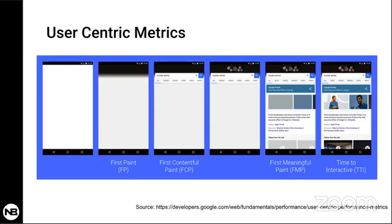As Google developers show, there are different stages in the loading experience of a web page — first paint, first contentful paint, and so on. You can visit that URL for more details, but the key point is you want to make sure that at least the first elements of your HTML page are provided and available to users quickly.